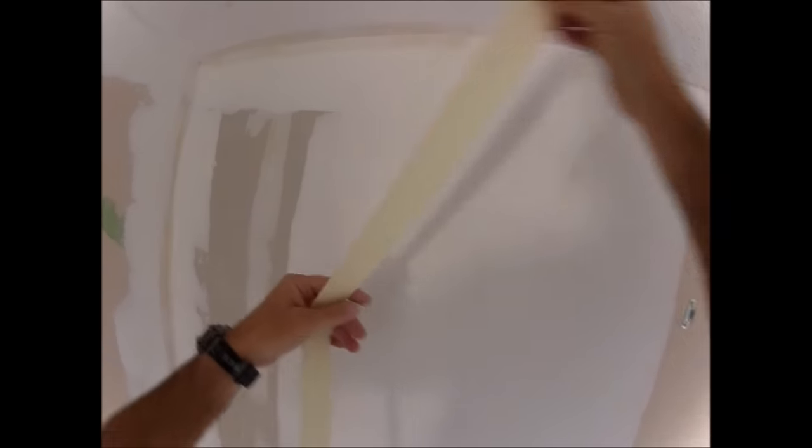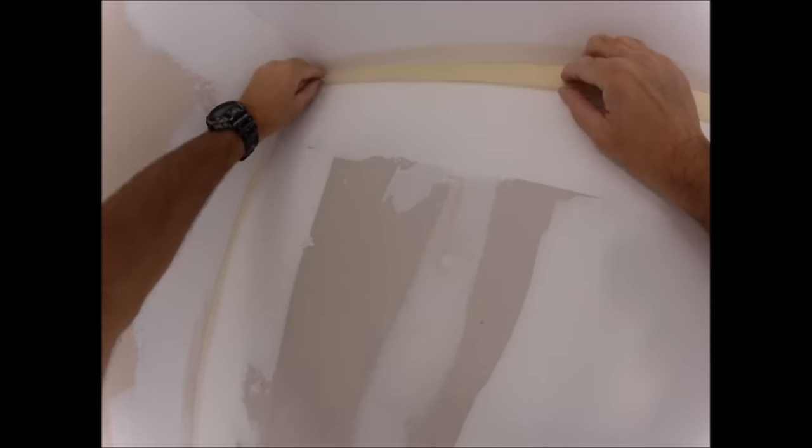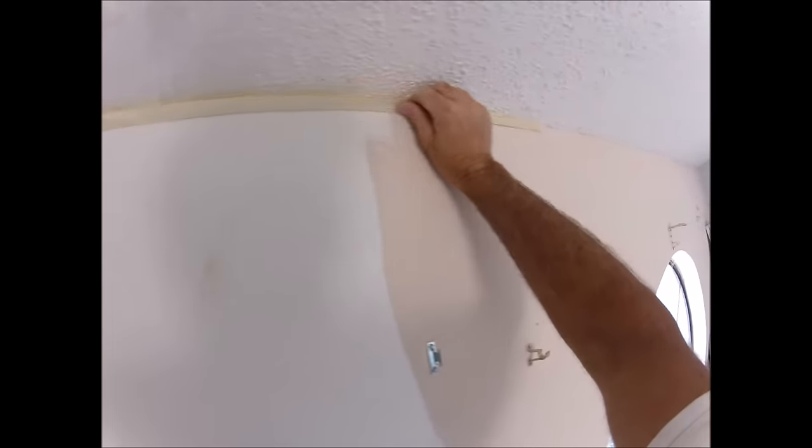First thing you want to do is get the masking tape up on the walls. This bubble is going to go out into the ceiling so anywhere on the wall that you're going to have your bubble, you're going to need masking tape. Make sure it's stuck real good, probably about a finger's width, and then the remainder of the tape is going to hold the plastic.